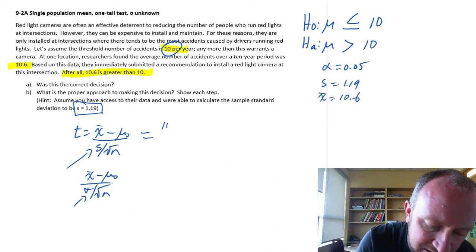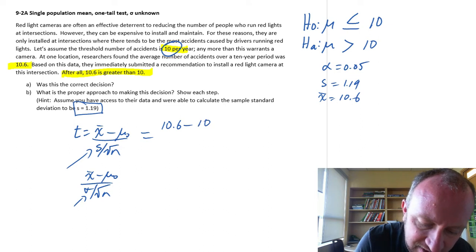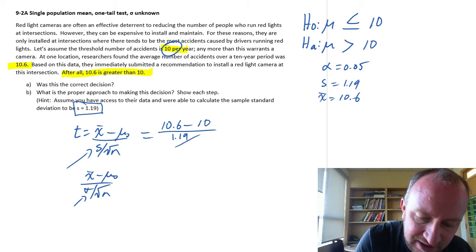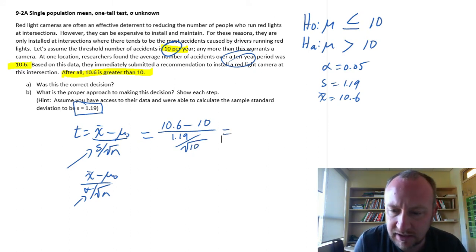So our sample mean was 10.6 minus the hypothesized value was 10. Our sample standard deviation was 1.19, and our sample size, this was over a 10-year period, so this is 10, yes, 10, square root of 10. Okay, now let's find that calculator.